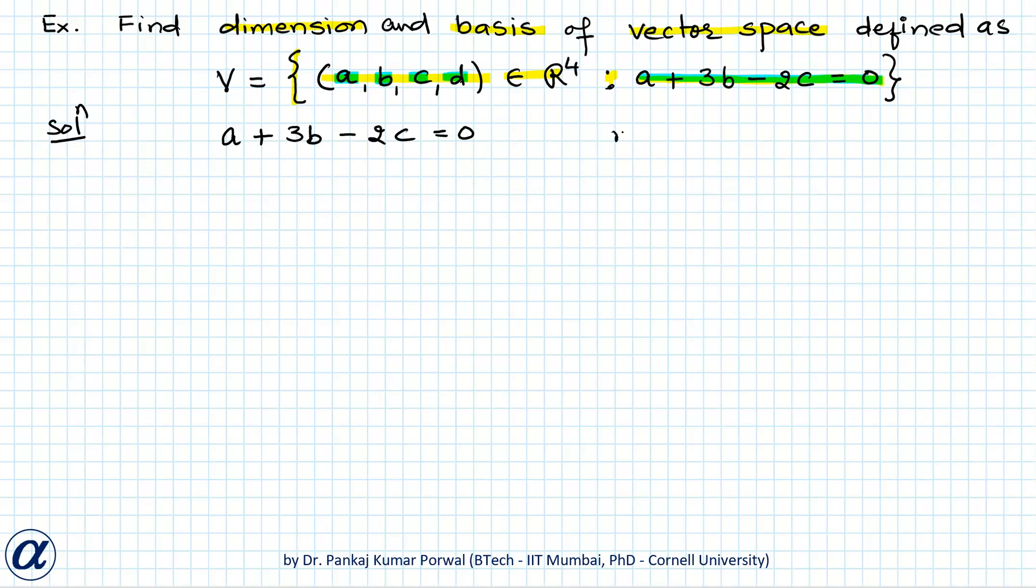So here n, that is number of unknowns, is 4 and m, that is number of equations, equals 1. So if I write this equation in matrix form then it will be 1, 3, minus 2 and 0.